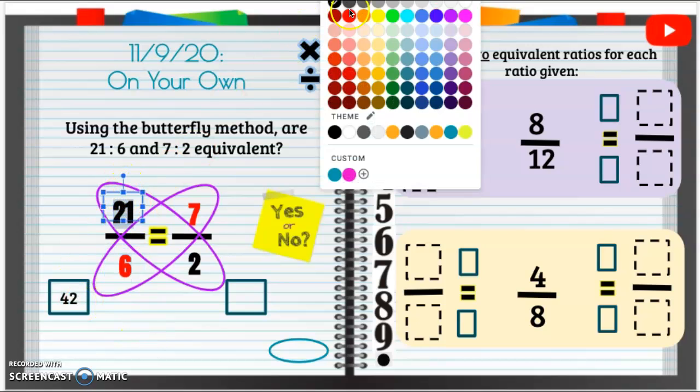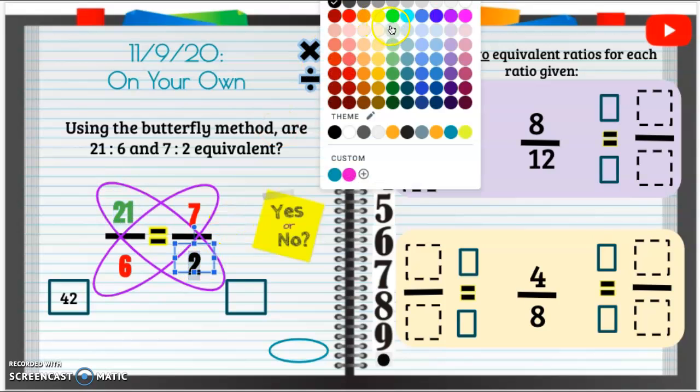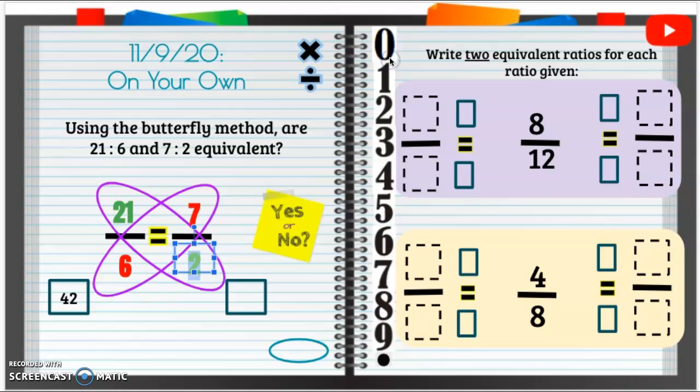Now we have 21 and 2. What do we do with those numbers? We multiply them. 21 times 2 is going to be 42.